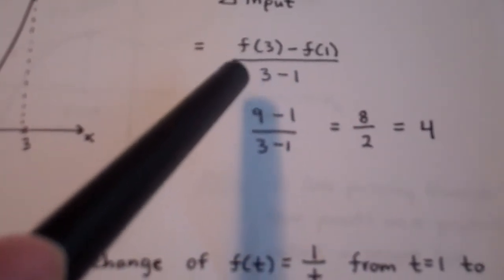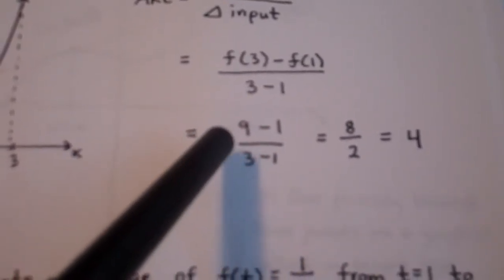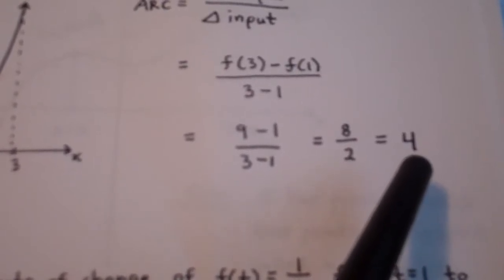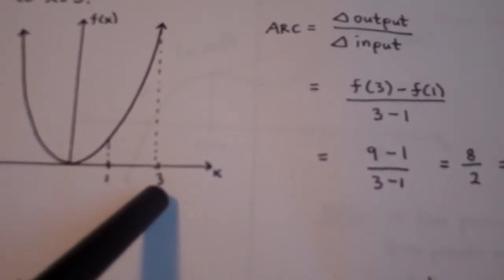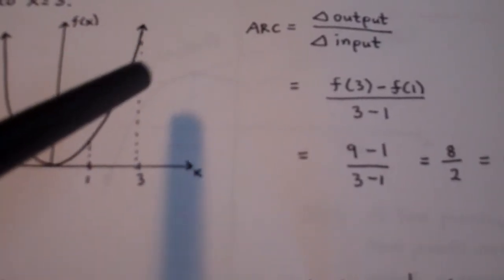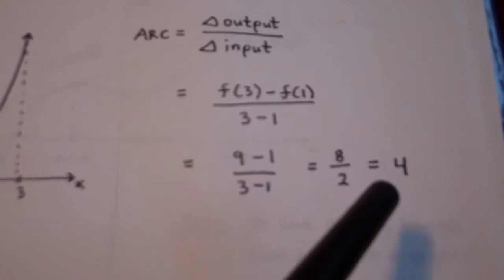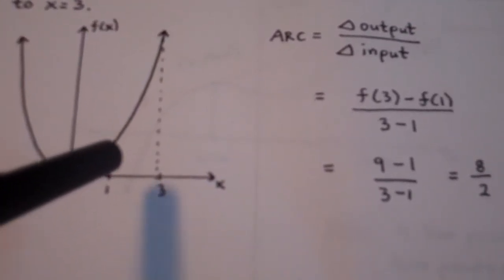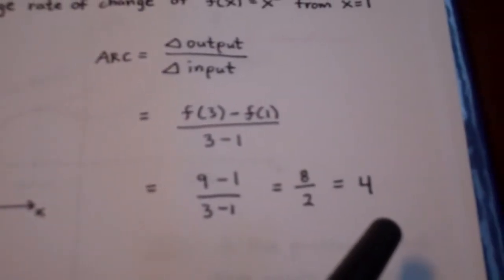Doing our function evaluations, f of 3 is 9 and f of 1 is 1. So we have 9 minus 1 over 3 minus 1, which gives 8 over 2, and an average rate of change of 4. From x equals 1 to x equals 3, the function is always increasing at a different rate, but the average of all those rates is simply 4. From a slope standpoint, the slope is smaller near the bottom than at the top, but the average of all those slopes is simply 4.